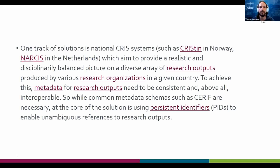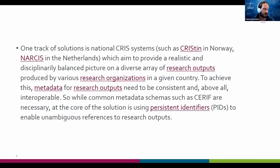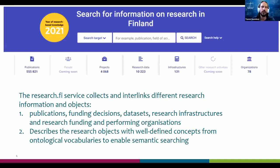A common metadata schema such as CERIF can act as an intermediator: you make a mapping from schema A to CERIF, and from CERIF to schema B. If you want to add another mapping, you add from CERIF to C, enabling you to go from A to C without a direct mapping. Achieving metadata interoperability remains a challenge, but a key precondition is having persistent identifiers to enable unambiguous references to all research outputs. The research.fi service currently aggregates publications, research funding decisions, research data, research infrastructures, research performing organizations, and funding organizations.